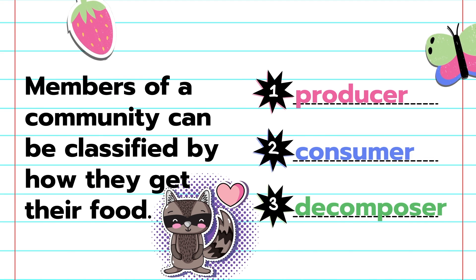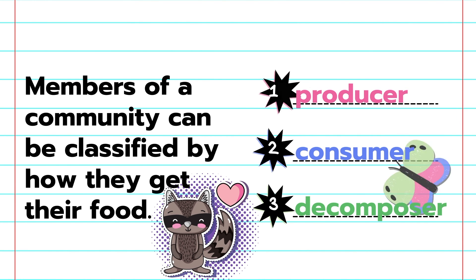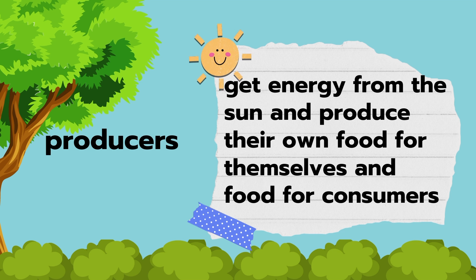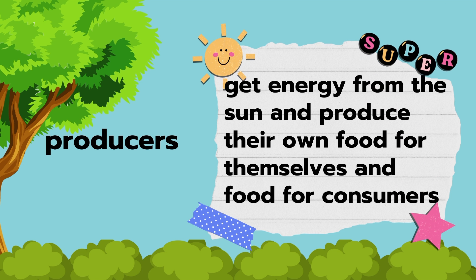Organisms can be classified by how they get their food. They can be producers, consumers, or decomposers, depending on how they get their food.